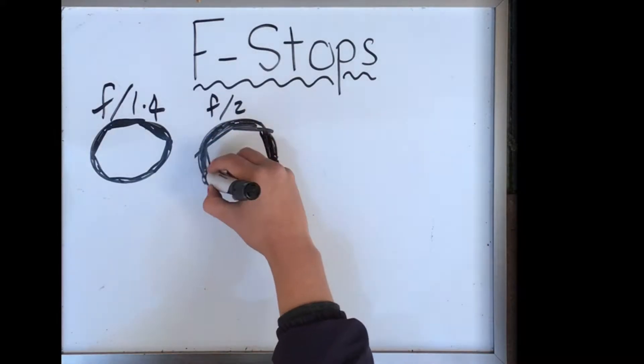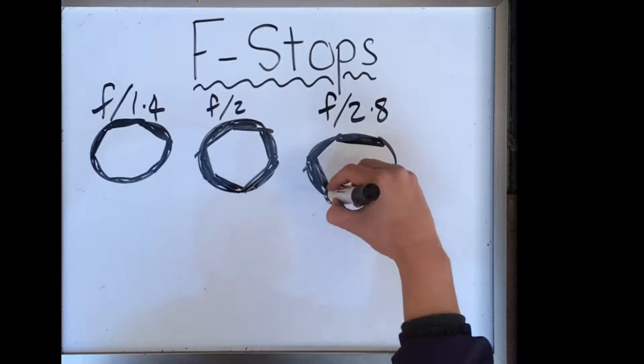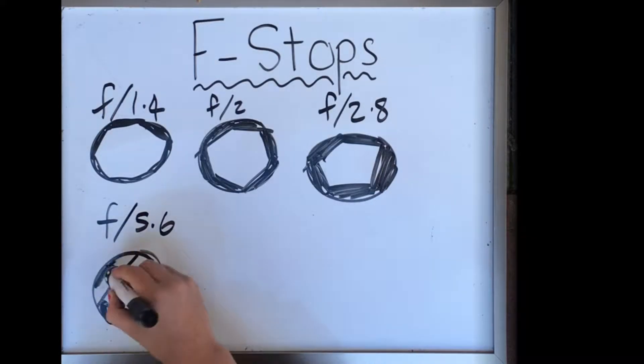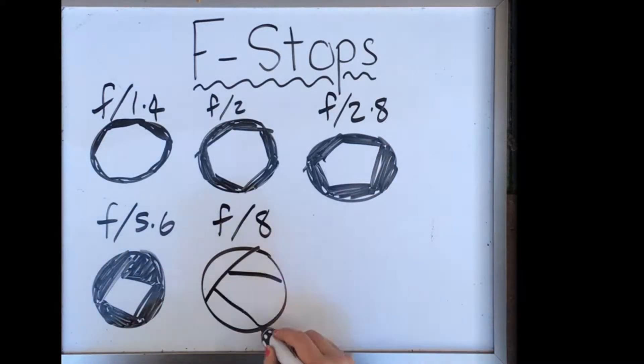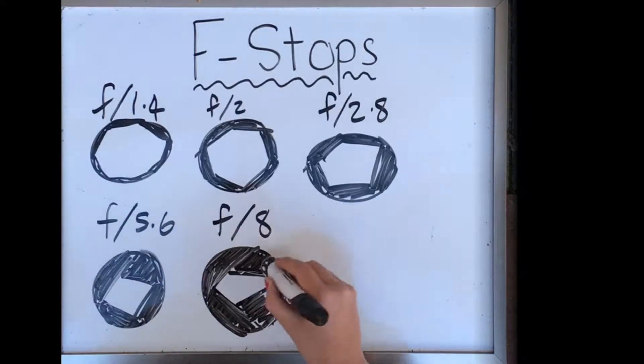To understand how f-stops work, you must first understand that the f-stop is a ratio. To get the ratio, you use the formula of the focal length divided by the diameter of the aperture in the lens.